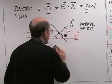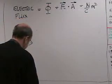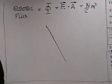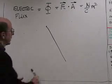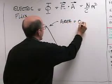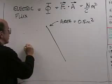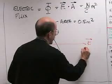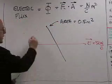I have a square sheet and I'm going to show it on the side, so I've got a sheet that is going like this. I'm looking at it from the side and it has an area equal to 0.5 meters squared. I've got an electric field going this way of 50 Newtons per Coulomb, and I'm assuming